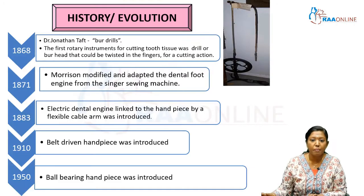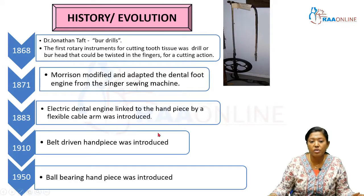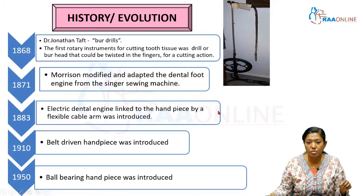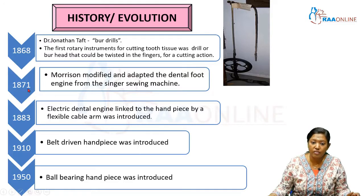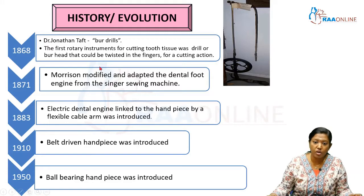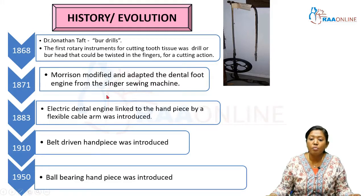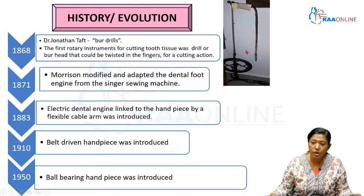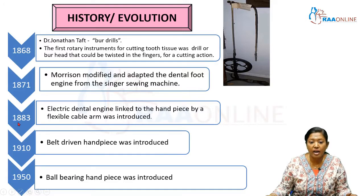Now we will see the history and evolution of rotary instruments. In the year 1869, Dr. Jonathan Taft introduced burr drills — the first rotary instruments, twisted around the fingers and used for cutting tooth structure. In 1871, Morrison adopted the design from the Singer's sewing machine wheel as a source of power for driving the handpiece. In 1883, electricity was used to power the rotating tool using a flexible cable arm.